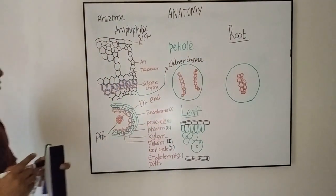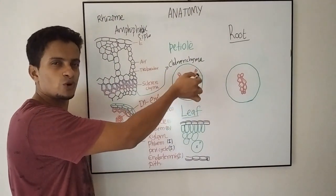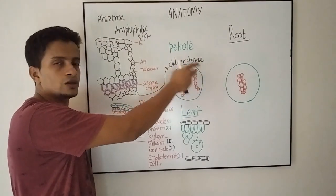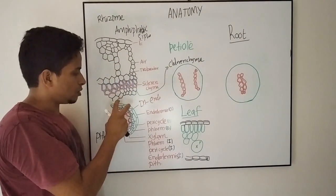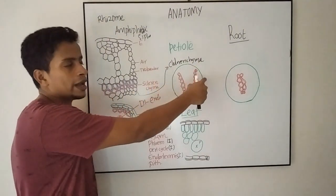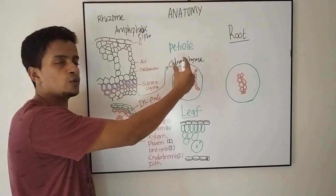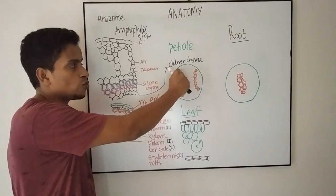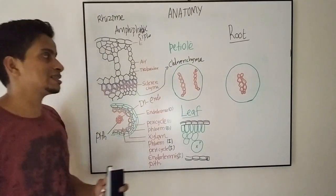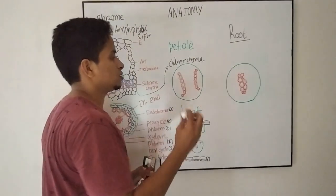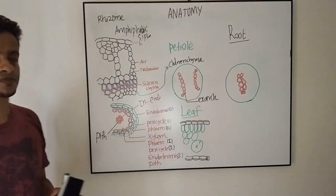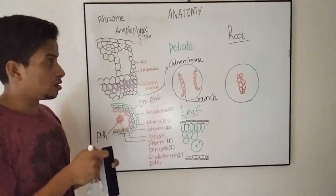The stele region is composed of endodermis followed by the pericycle, followed by phloem. V-shaped or small C-shaped xylem strands can be seen, and they are arranged accordingly. This is the structure of the petiole anatomy.